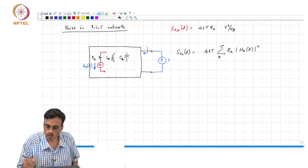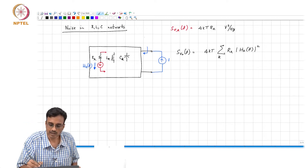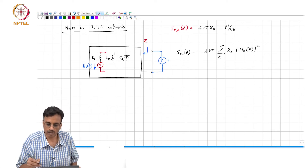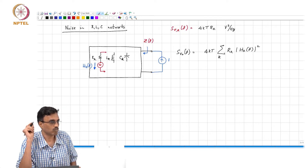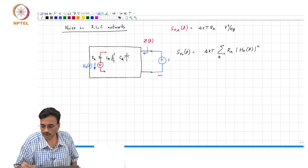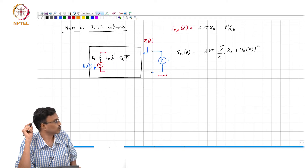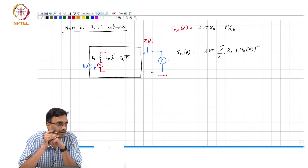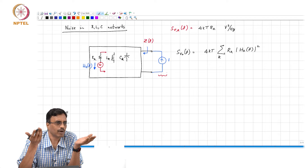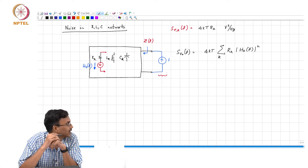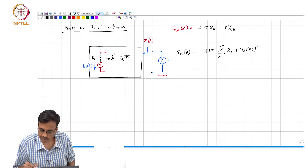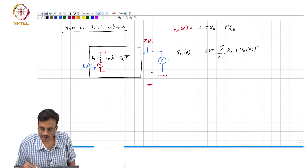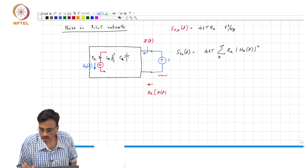The next thing I'd like to draw your attention to is the looking-in impedance — let us call that Z(f). What comment can we make about the power supplied by this current source into the box? If you have a current driving into an impedance Z(f), the power going in is I² times the real part of Z(f) — and since I equals 1, it is simply Re(Z(f)).